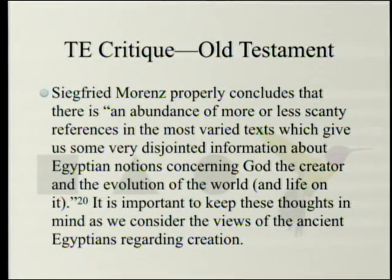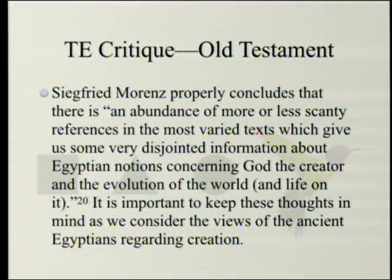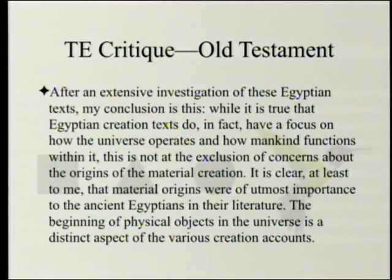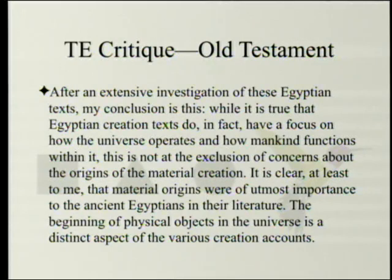Siegfried Moritz properly concludes that there is an abundance of more or less scanty references in the most varied texts, which gives very disjointed information about Egyptian notions concerning God the Creator and the evolution of the world and life on it. After an extensive investigation of these Egyptian texts, the conclusion is this: while it is true that Egyptian creation texts do have a focus on how the universe operates and how mankind functions within it, this is not at the exclusion of concerns about the origins of the material creation.